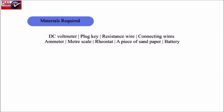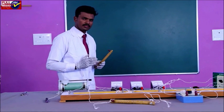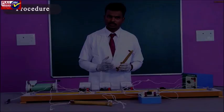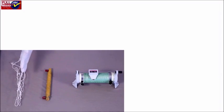Materials required: a voltmeter, plug key, resistance wire, connecting wires, ammeter, meter scale, rheostat, a piece of sandpaper, and a battery. Procedure: Setting up the elements of the circuit.